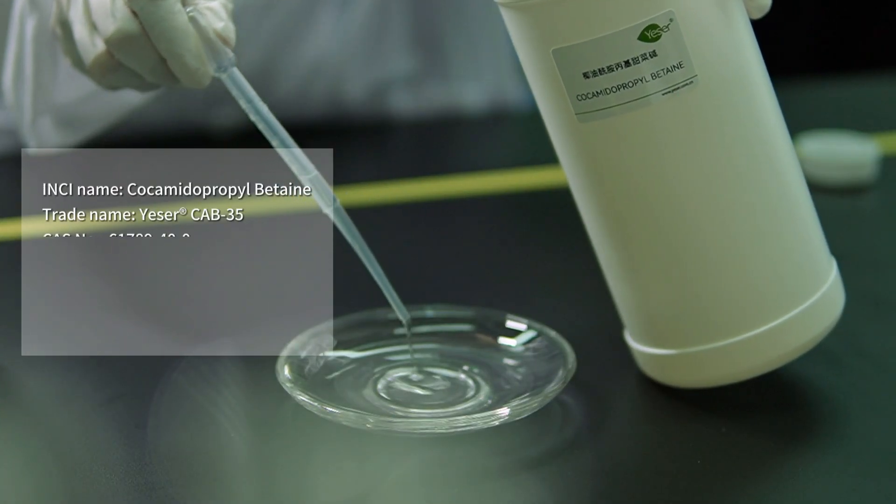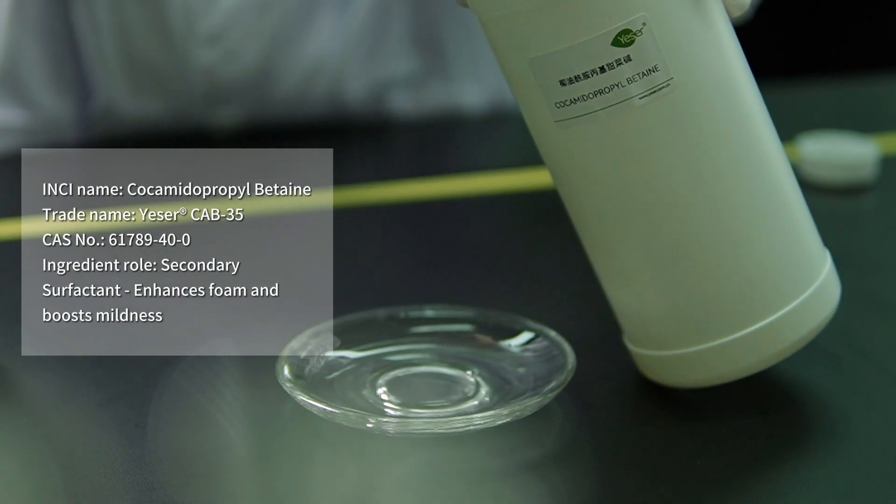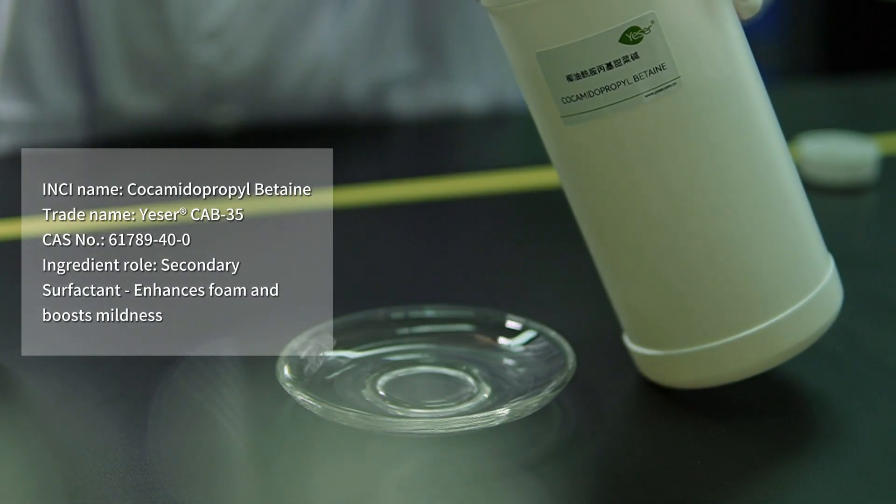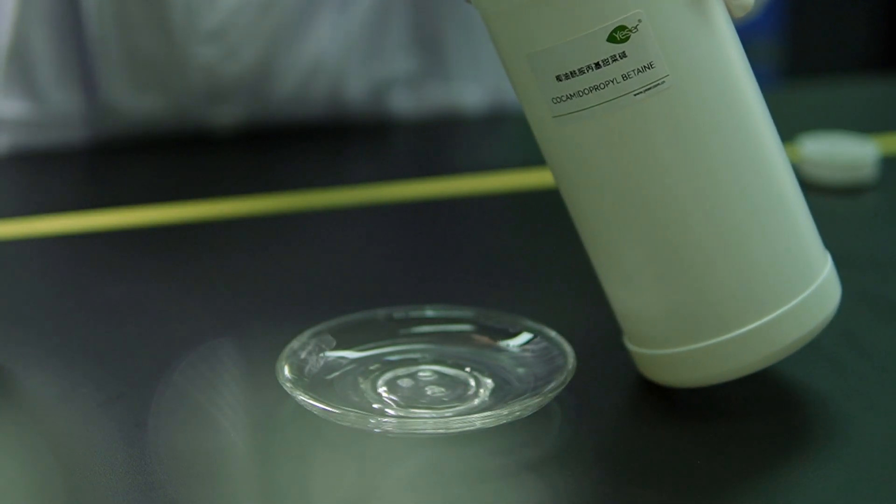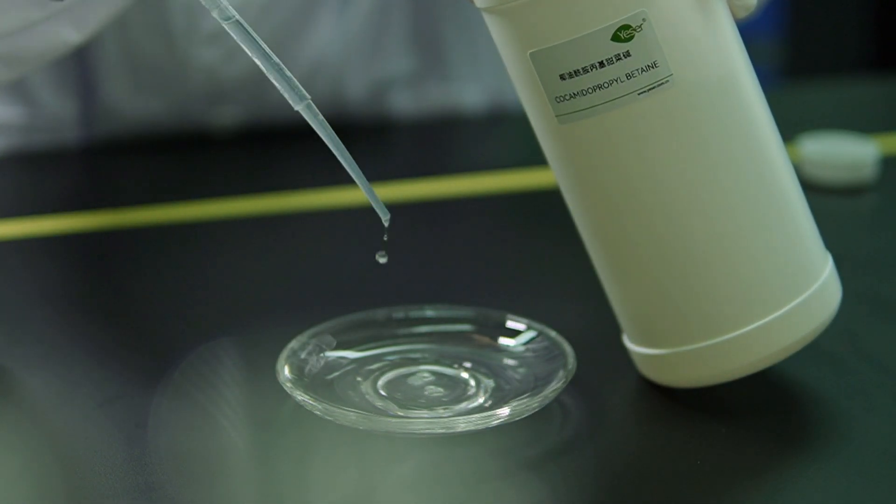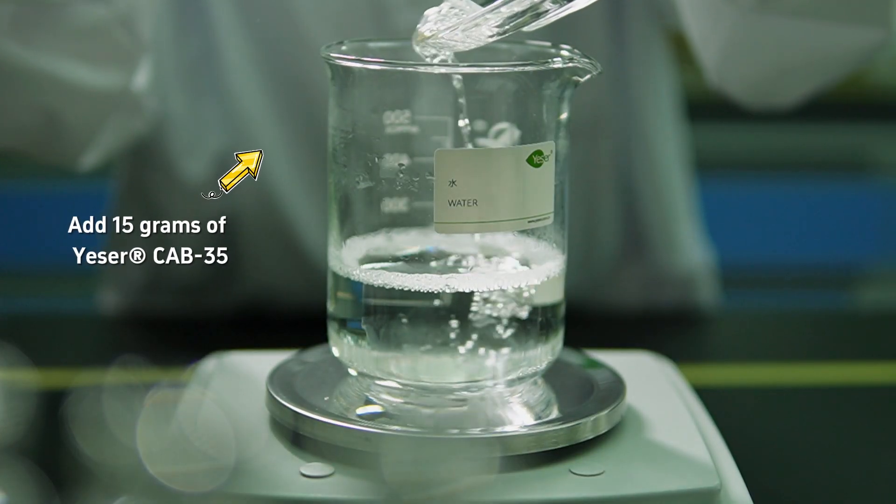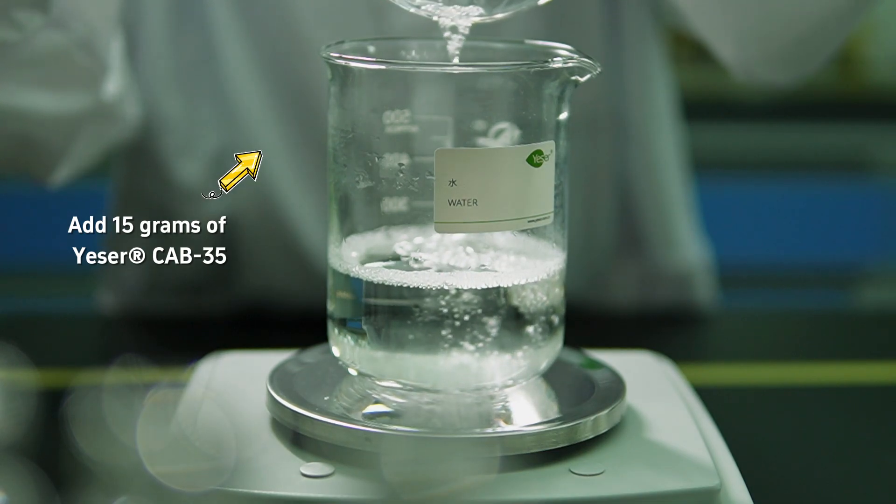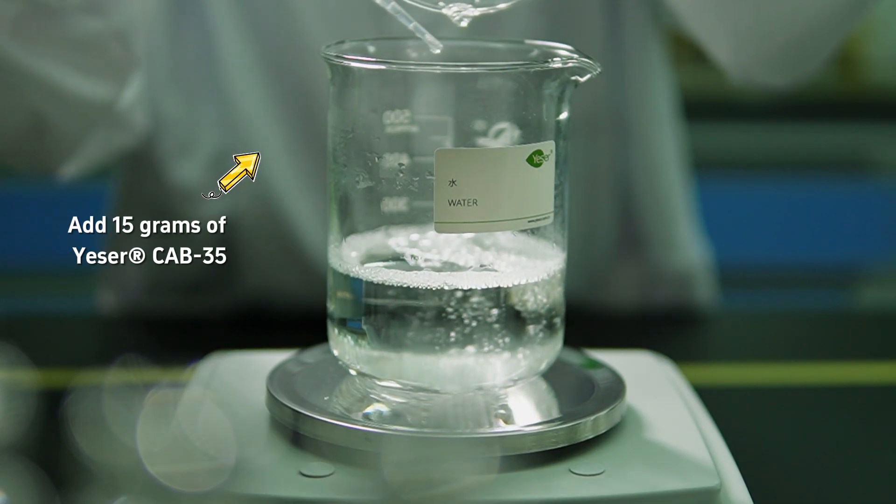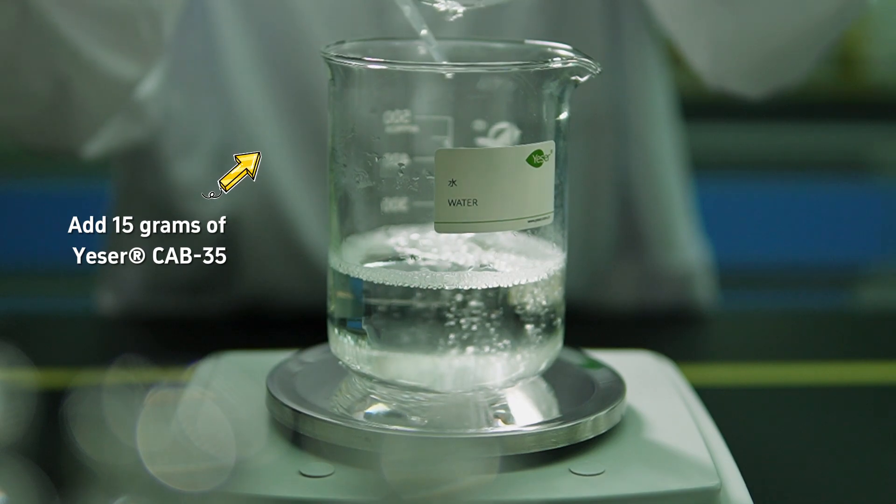Moving on to Phase B. We've got two more ingredients on deck, Yeser CAB-35 and Yeser CDEA, proudly produced by Yeser Chemicals. These two are well-known secondary surfactants in the world of detergents and personal care products. First up is CAB-35, also commonly known as CAPB 35%. This stuff is awesome for boosting foam and it's really mild, which is great for keeping our bath gel gentle on your skin.